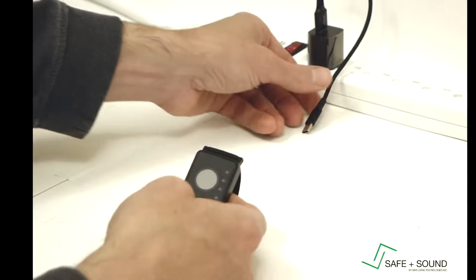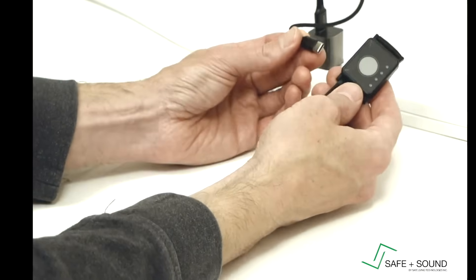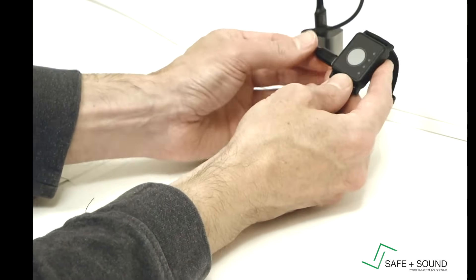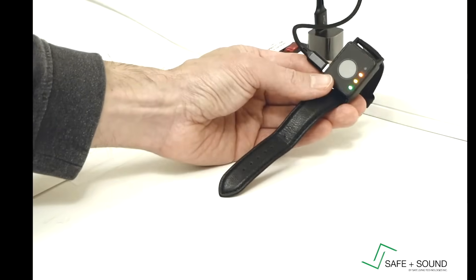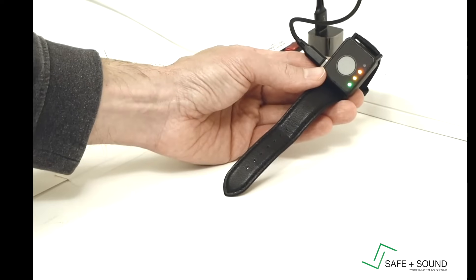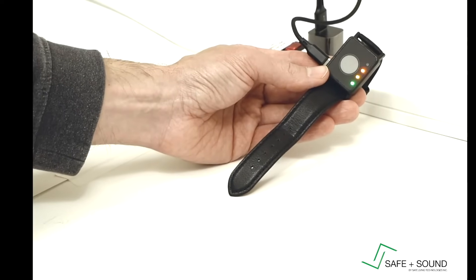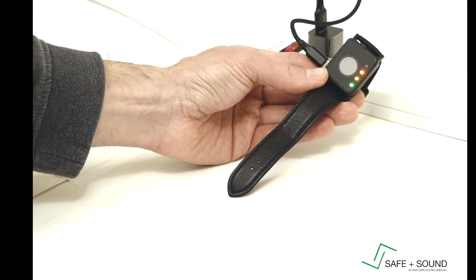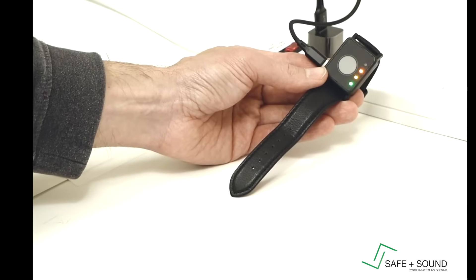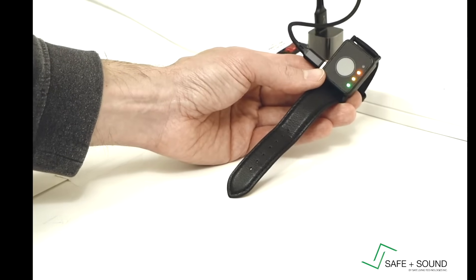To charge the unit, we go back here to the USB adapter. Simply plug the unit into the USB-C. As it's charging, it's going to show you its current battery level. When all the LEDs are on and no LEDs are flashing, that means the unit is fully charged and ready to go.